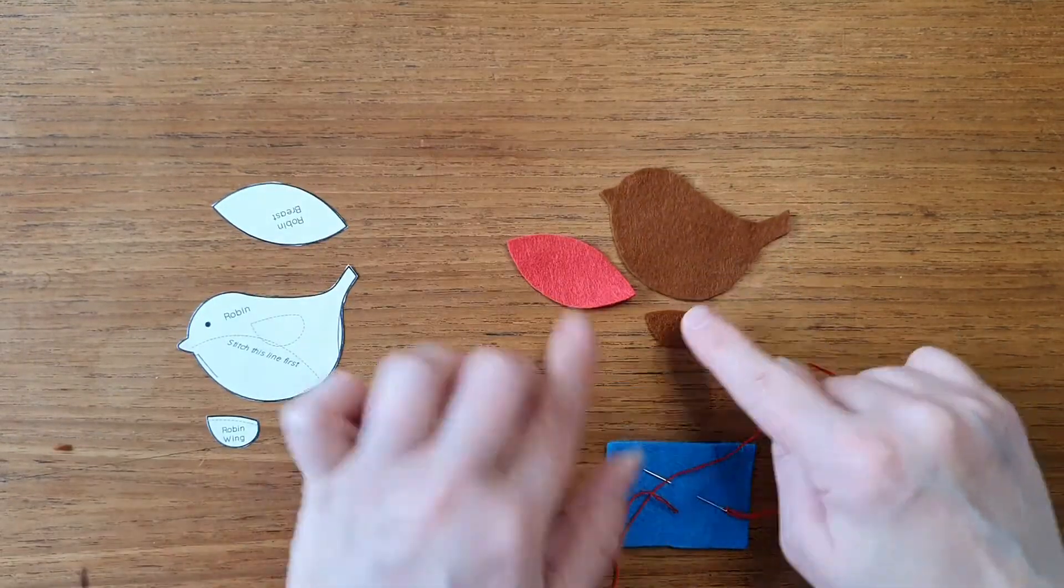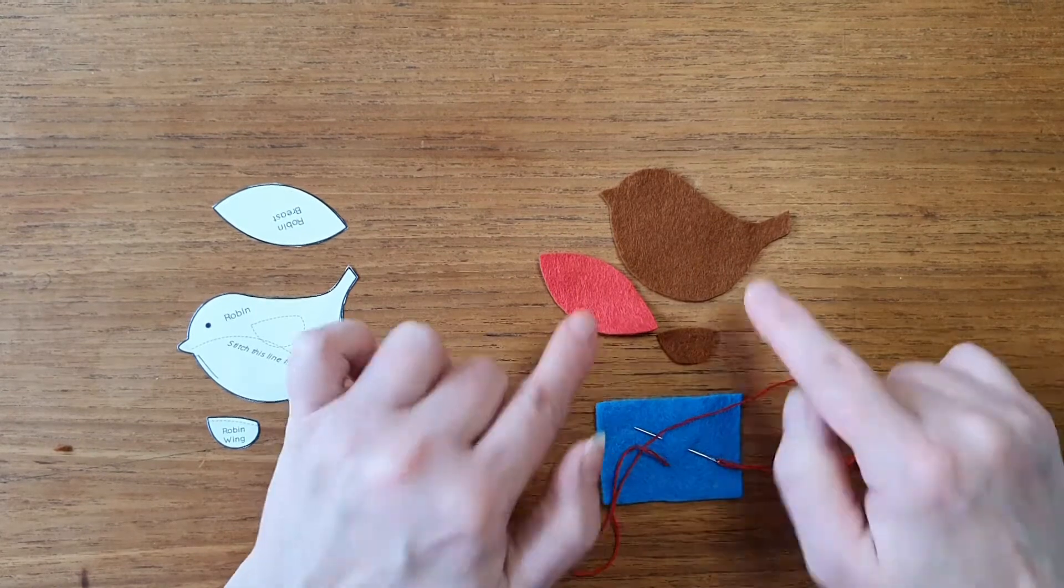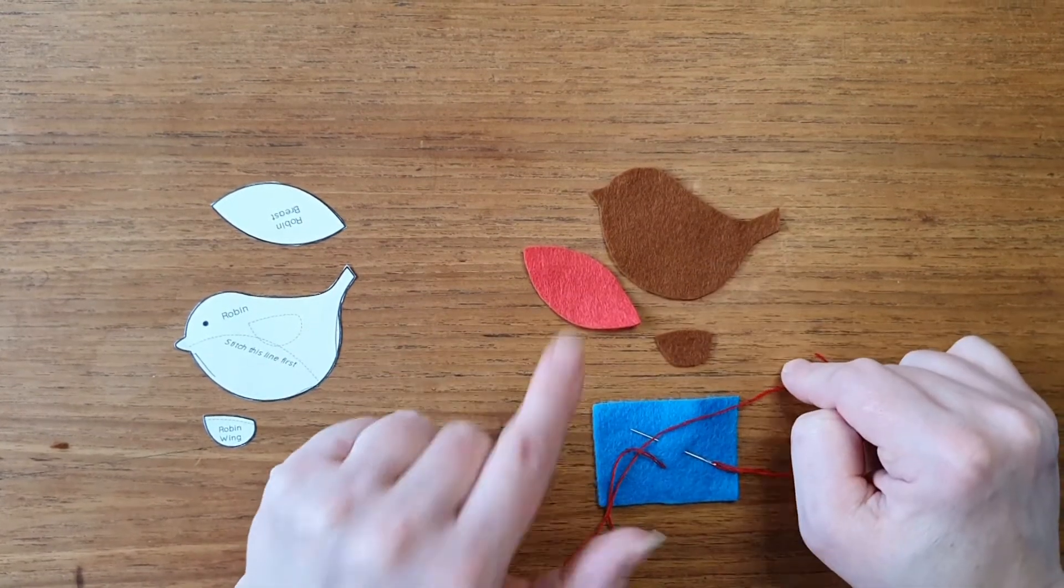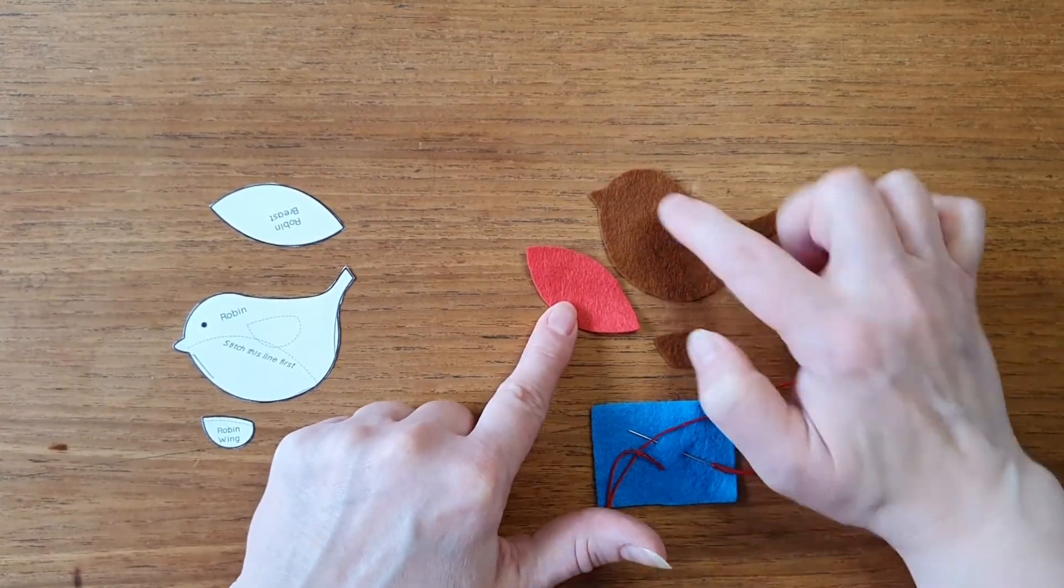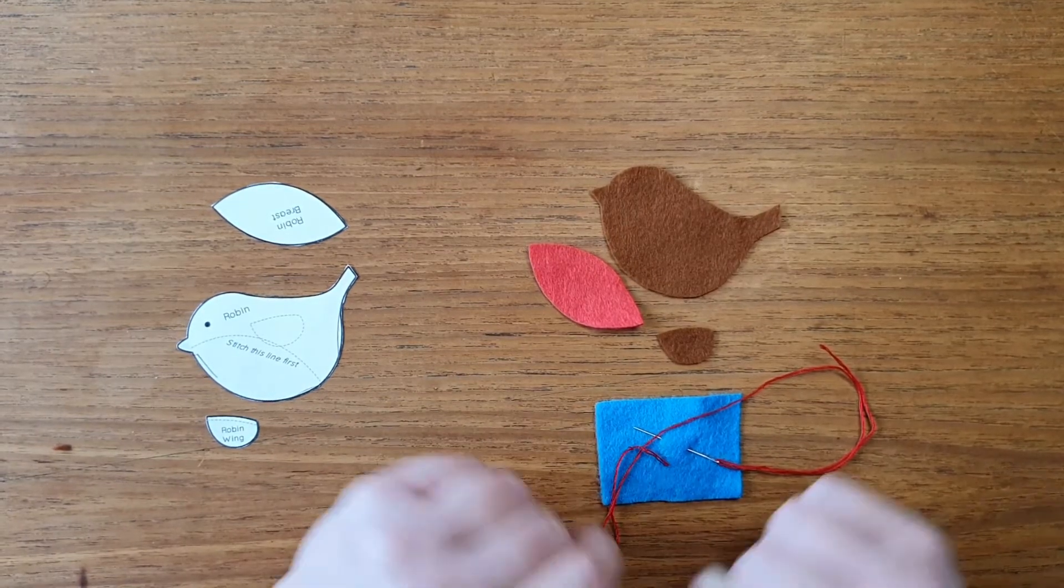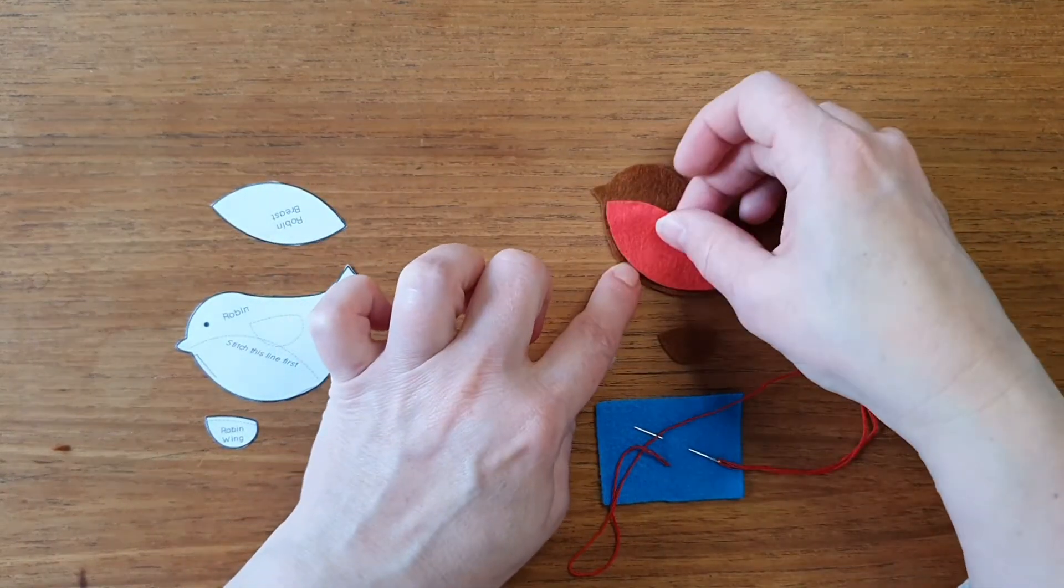I'm going to start with this and the details. The details we have on the robin are the red breast, the wing, and we would have a little eye as well. So I'm going to place the pieces on.